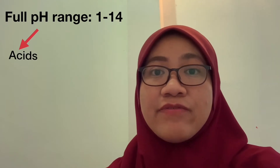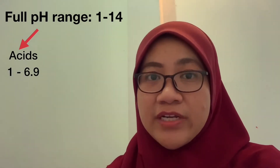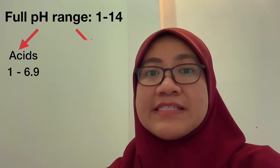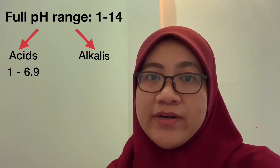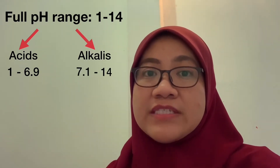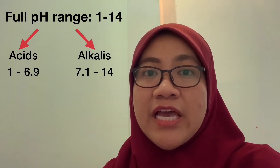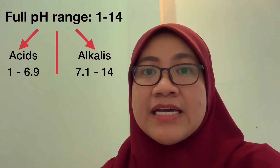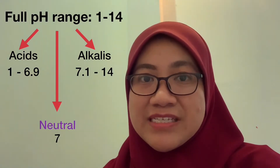The pH value ranges from 1 until 14. The range of pH value for acid is from 1 until 6.9, and for alkali it is from 7.1 until 14. pH number 7 is for a neutral substance.